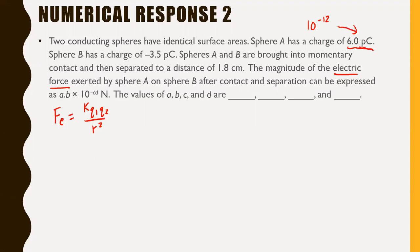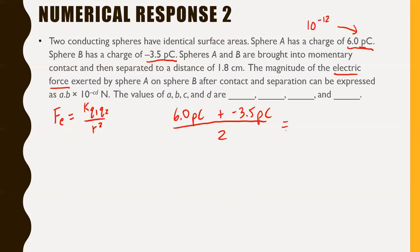So the P stands for times 10 to the negative 12. We don't see that one very often, but all metric units are on your formula sheet. Sphere A with positive 6.0 picocoulombs is being touched to sphere B with negative 3.5 picocoulombs. When two charged objects touch, they get the average of their charges. So 6.0 plus negative 3.5 gives us 2.5 picocoulombs, divided by two gives 1.25 picocoulombs — the charge of each sphere. They'll both be positive 1.25 picocoulombs and will repel each other.